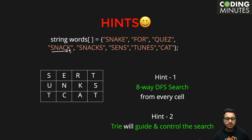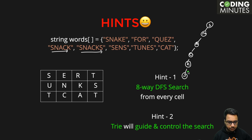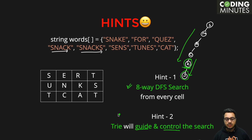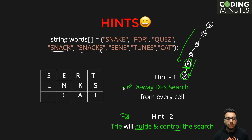For example, both 'k' in 'snack' and 's' in 'snacks' are terminal nodes. When you reach 'k', you put 'snack' in the final list and continue exploring, eventually reaching 'snacks' and adding that too. You perform eight-way DFS from every cell, but it's a guided search — the trie tells you whether to proceed to a node or not, and also significantly helps reduce time complexity.